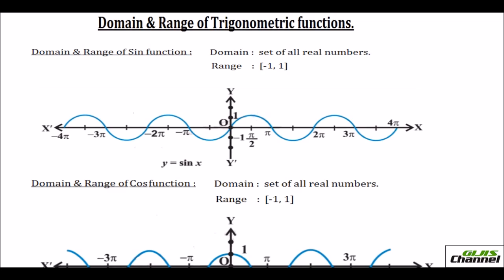In earlier classes we studied trigonometric ratios for acute angles as the ratio of sides of a right angle triangle. For sine at 0°, 30°, 45°, 60°, and 90° — covering the first quadrant — the values are 0, 1/2, 1/√2, √3/2, and 1. The value of sine increases from 0 to 1 as the angle goes from 0 to 90 degrees.